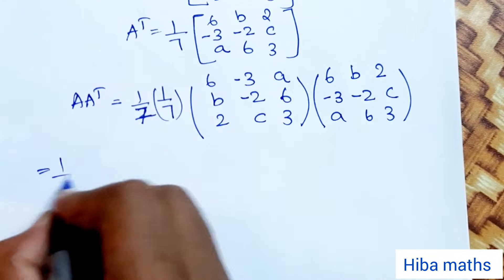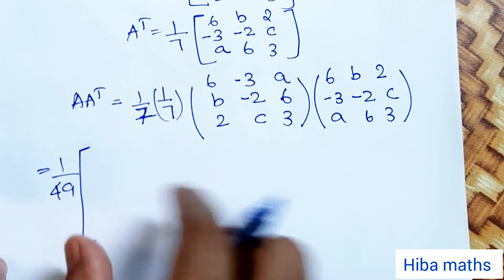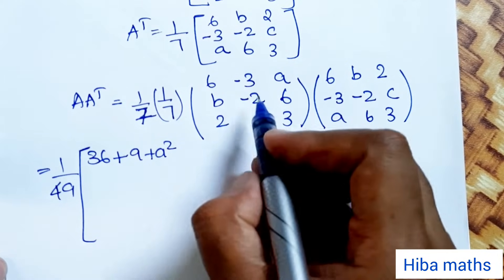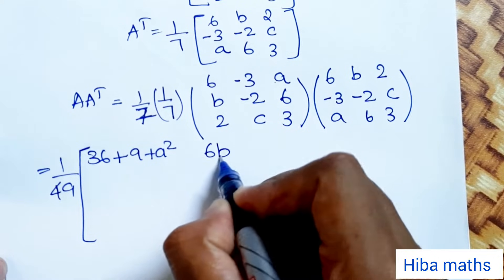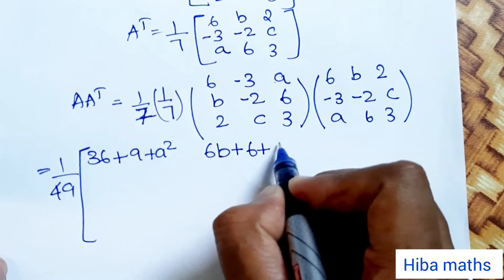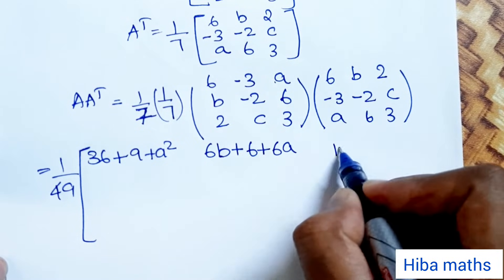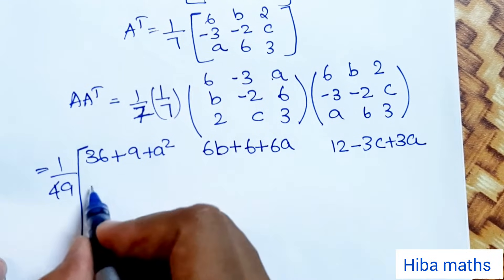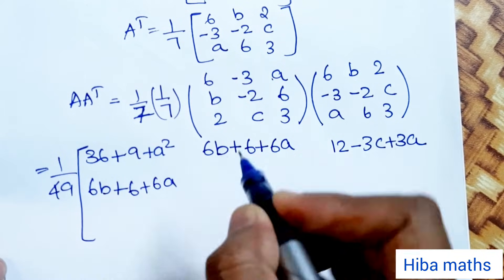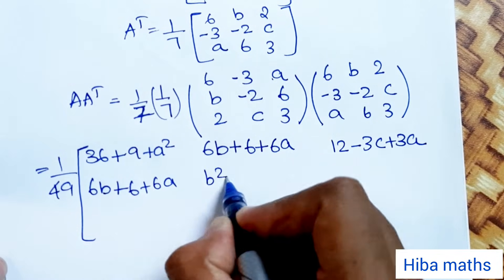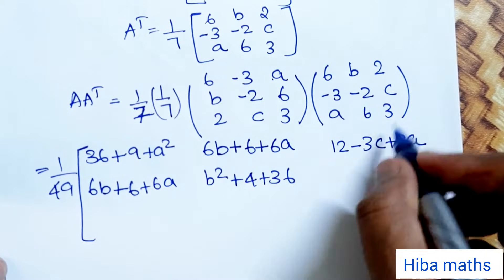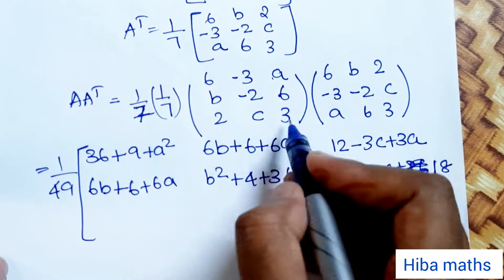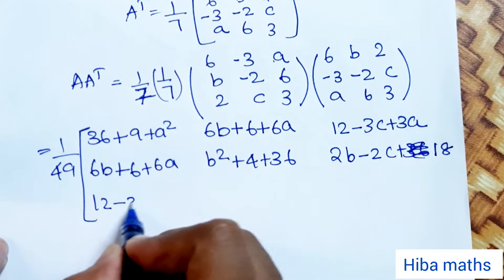7 times 7 gives 49, so we have 1 by 49. First row, first column: 36 plus 9 plus a squared. First row, second column: 6b plus 3 times (-2) plus 6a. First row, third column: 12 minus 3c plus 3a. Second row, second column: b squared plus 4 plus 36.